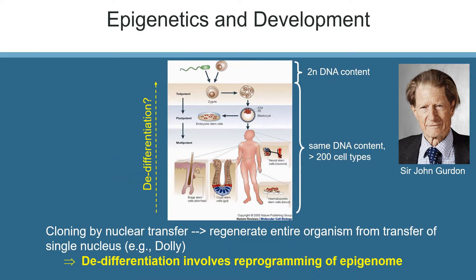In the 1960s, John Gurdon performed the first nuclear transfer experiments, injecting the nuclei of mature intestinal frog cells into enucleated egg cells. He showed that a fully mature organism could form, creating a clone of the original adult organism and demonstrating that a fully differentiated cell could be de-differentiated to become pluripotent again. All the instructions for determining cell differentiation were present in the artificially nucleated egg.